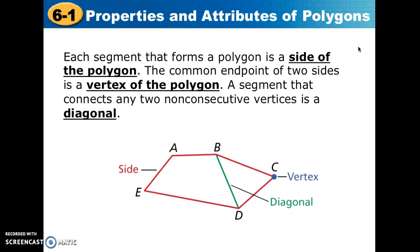There is another type of segment called the diagonal, represented by the green one, and that is when we join together two non-consecutive vertices such as B and D. There are many other diagonals we could draw: a segment from B to E, A to D, E to C, or A to C. So we have a lot of different diagonals that we could create within this five-sided polygon, or pentagon.